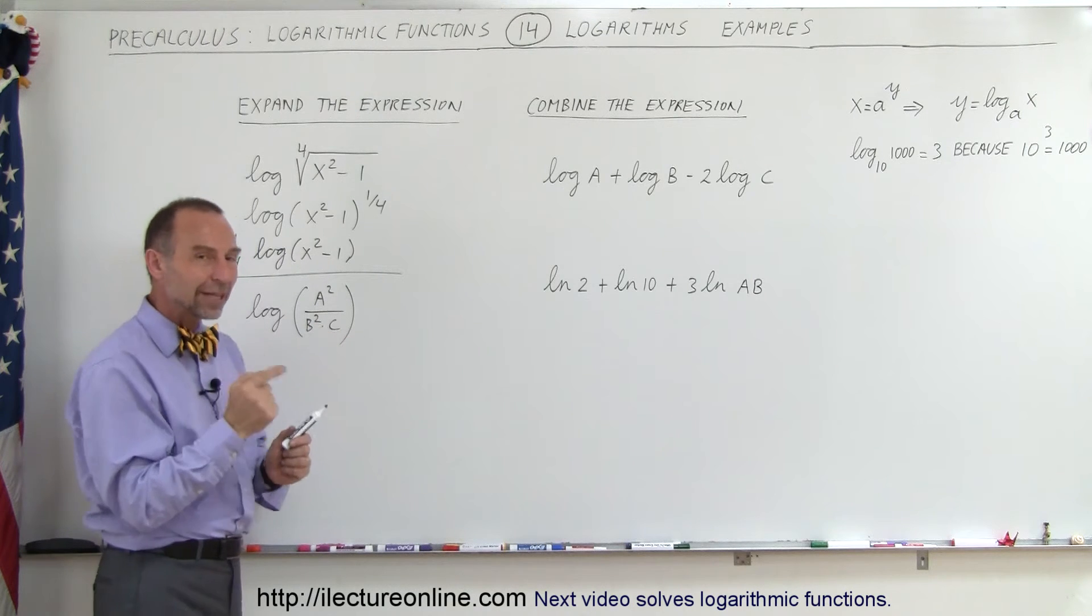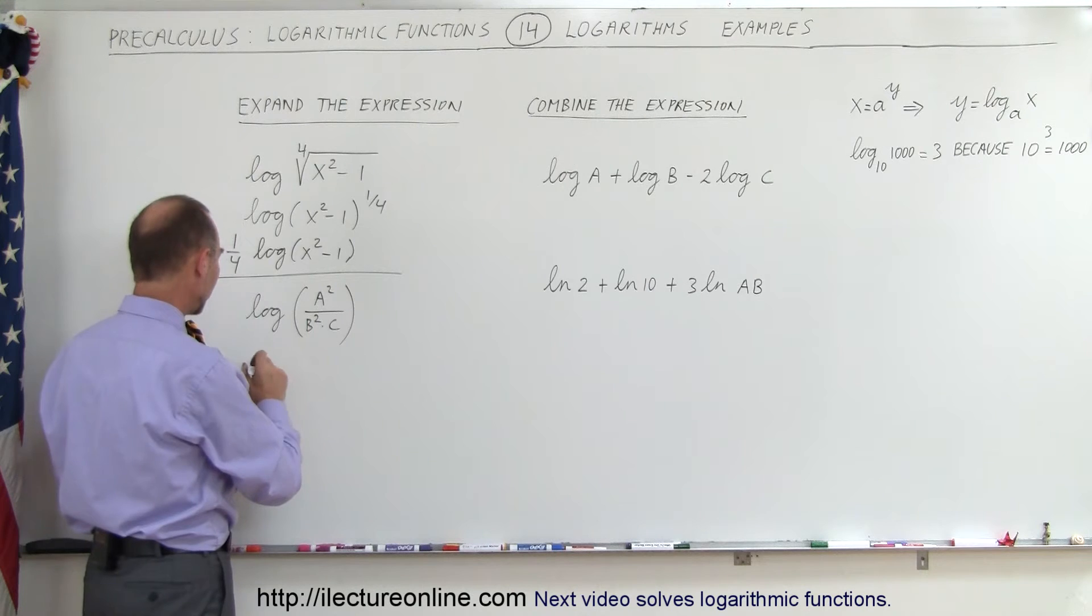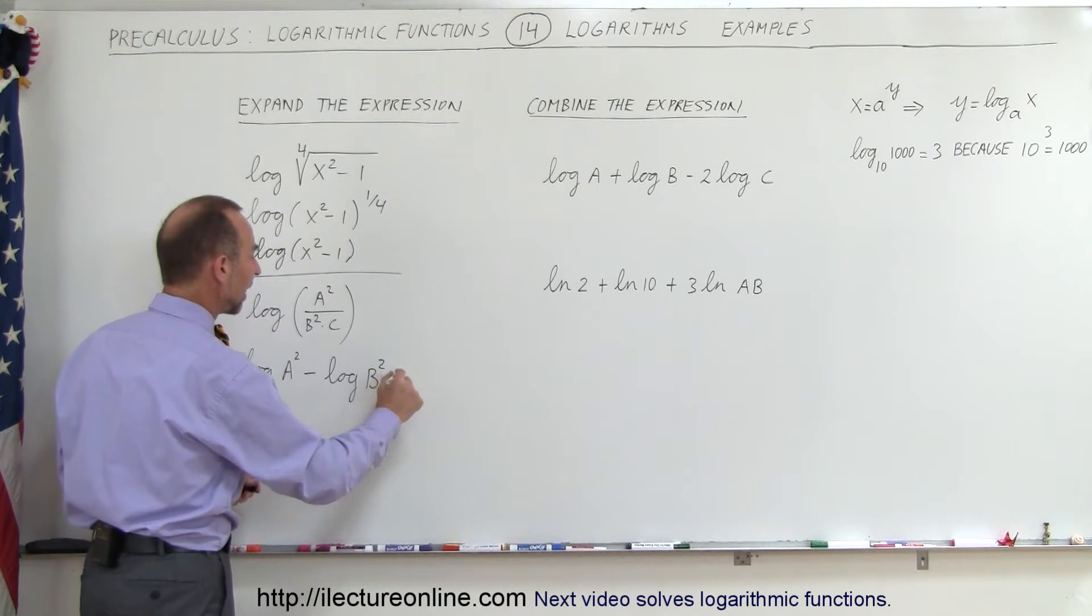Now if we take a look at this one here, here we can go that particular route. Here we have a division, so this can be written as the log of the numerator, which is a squared, minus the log of the denominator, which is b squared times c.